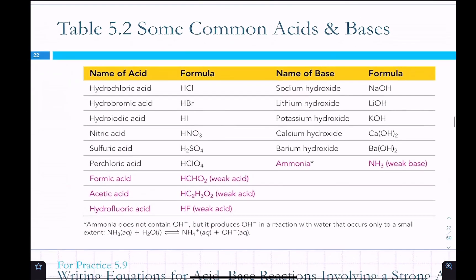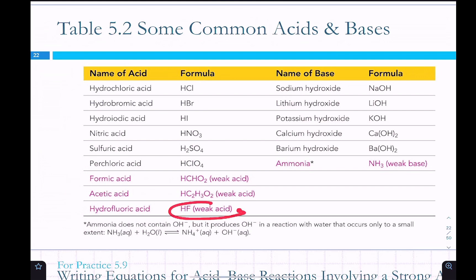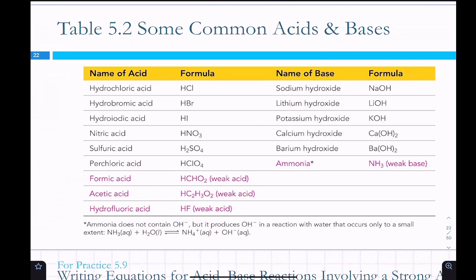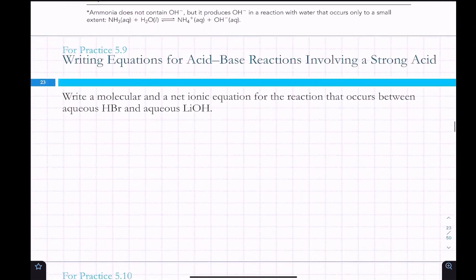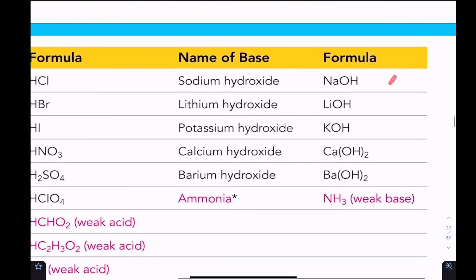Common strong acids: HCl (hydrochloric), HBr (hydrobromic), and others. Weak acids include hydrofluoric acid (the only binary weak acid we'll deal with), formic acid, and mostly acetic acid. For bases, almost all are strong bases — the exception is ammonia, which is that special weak base. Notice that all strong bases are just alkali or alkaline earth metals with hydroxide — pretty easy to identify.